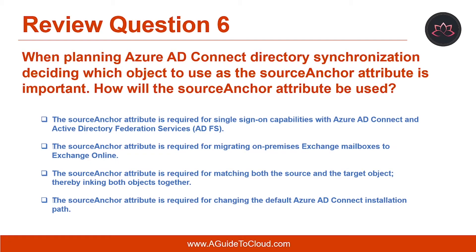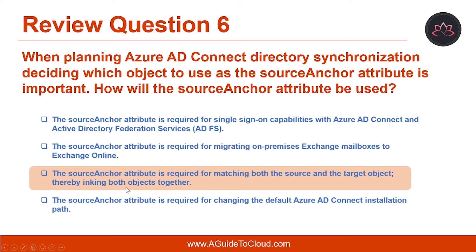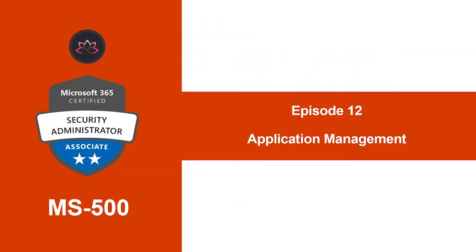Let's look at question number six. When planning Azure AD Connect directory synchronization, deciding which object to use as the source anchor attribute is important. How will the source anchor attribute be used? The correct answer is: the source anchor attribute is required for matching both the source and the target object, thereby linking both objects together.